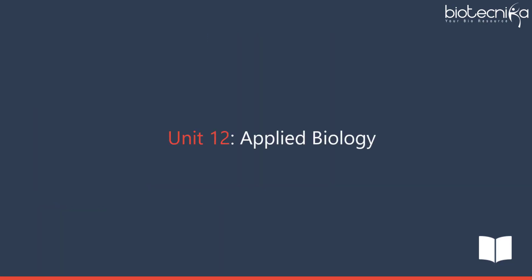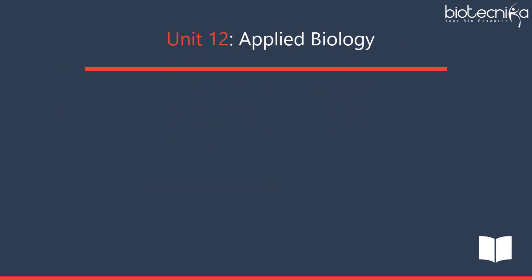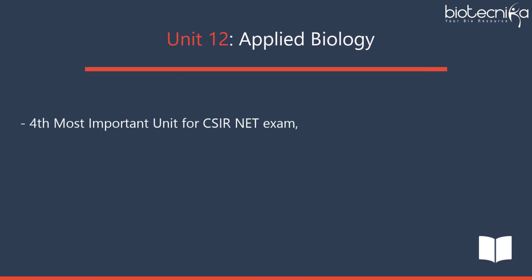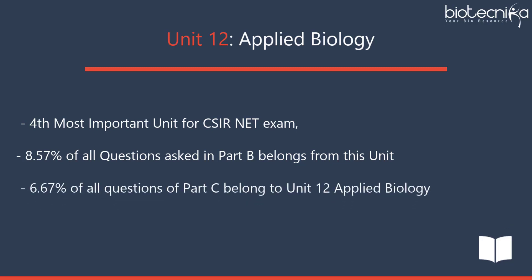Unit 12 – Applied Biology is the 4th most important unit for CSIRNET exam. Missing it risks your chances for a JRF. 8.5% of all Part B questions and 6.67% of all Part C questions belong to this unit.